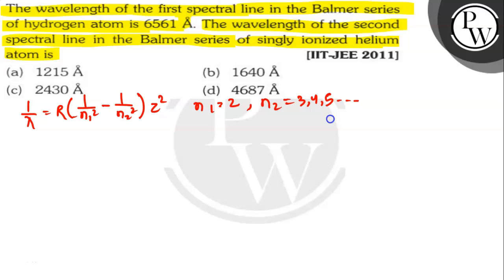The Balmer series is the second series of the hydrogen emission spectrum. So the wavelength of the lines can be calculated by the formula: 1 by lambda is equal to R into 1 by n1 squared minus 1 by n2 squared, into z squared.